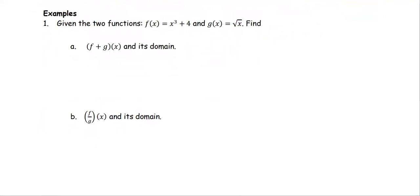Examples. Number one: given the two functions f of x equals x to the third plus four, and g of x equals square root of x, we're going to find the sum f plus g of x and its domain in part a, and f over g of x and its domain in part b.